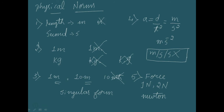These are the five fundamental physical norms we should keep in mind when representing SI units for any physical quantity. It should be in singular form, represented using correct symbols, with no full stop either at the end or in the middle. The units of derived quantities should be written in terms of ratios. And if a unit is named after a scientist, we write it with a capital letter in the symbol but use a small letter when writing its full name.